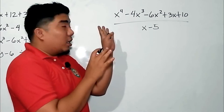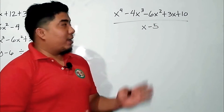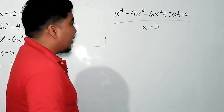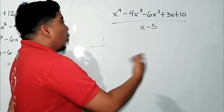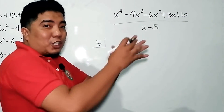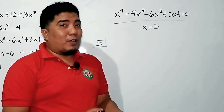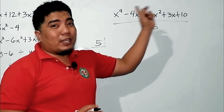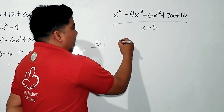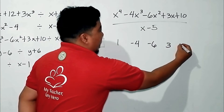We are now on our third example: x⁴ - 4x³ - 6x² + 3x + 10 divided by x - 5. First, we get our divisor. That is x - 5, so transposing gives us positive 5. Then we get the coefficients of each term. The degree goes 4, 3, 2, 1, 0, so all terms are available and in the correct arrangement. We get the coefficients: positive 1, negative 4, negative 6, positive 3, positive 10. We make a long line.